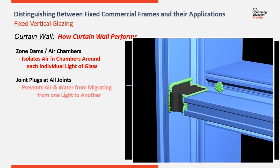Curtain walls do not let water move from one light of glass to an adjacent. This also stops air movement within the system, preventing what's called chimney effect. This is important because as you move across an elevation from zone 4, center zone, to zone 5, corner zone, air pressure increases. In order to achieve pressure equalization, each light of glass must be isolated.